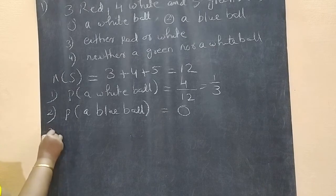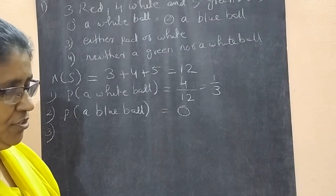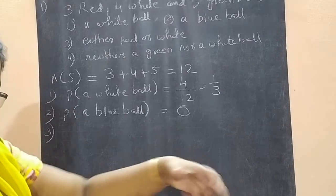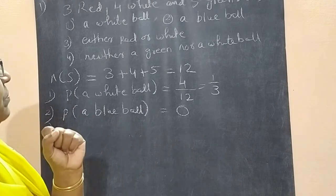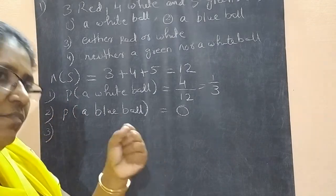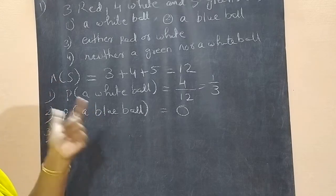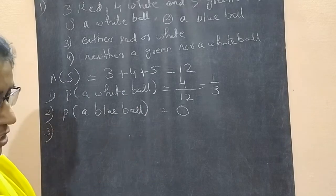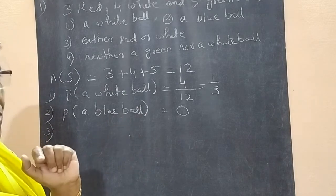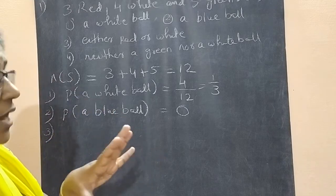Now third one is either red or white. So if we take a ball, if it is red, we win the game. If it is white, we win the game. So either or means both are possible. Red is possible, white also possible. Either or means both are possible.